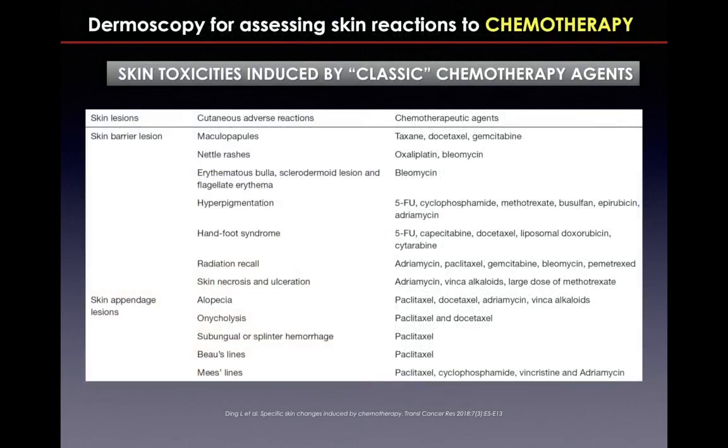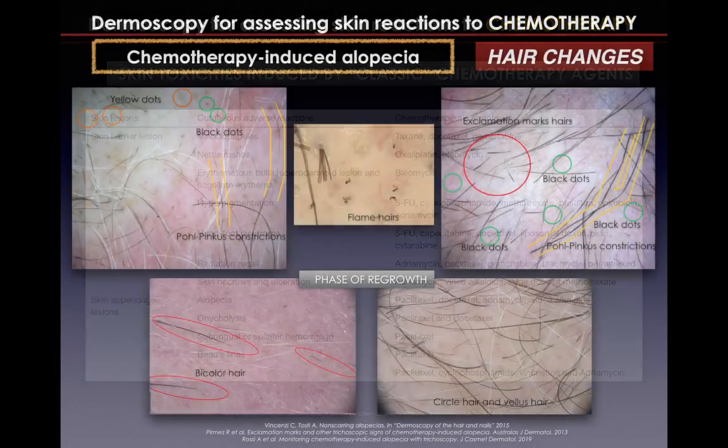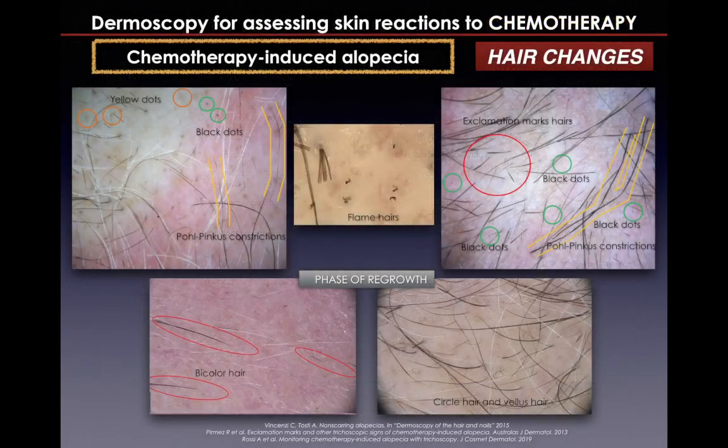Among skin toxicities induced by classical chemotherapy, chemotherapy-induced alopecia is one of the most shocking for oncological patients. It is characterized by different dermoscopic features before, during, and after chemotherapy. In particular, black dots, broken hairs, exclamation marks, and flame hairs are common at the beginning of chemotherapy as direct signs of the cytotoxic and anti-proliferating effects of the drugs.